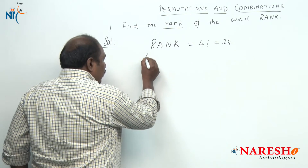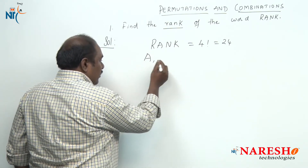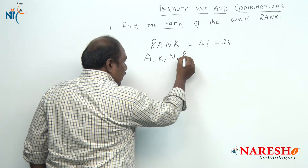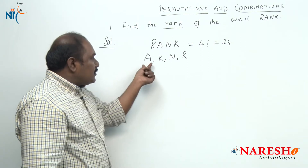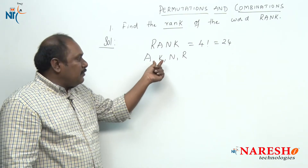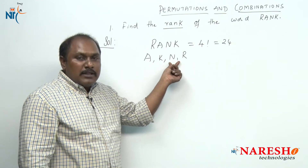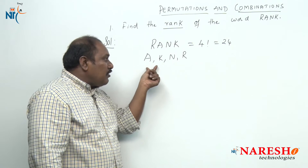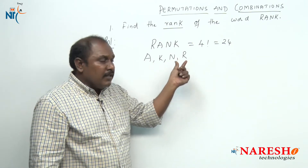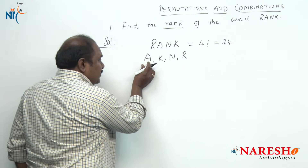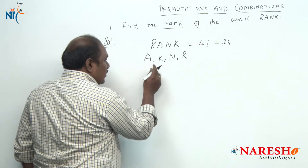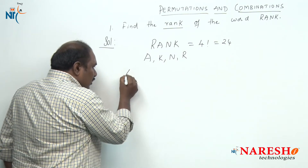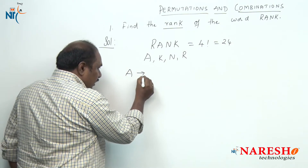If we write according to alphabetical order, the first letter should be A, next K, N, and R. So you have arrangements which start with A, arrangements which start with K, arrangements which start with N, and arrangements which start with R. Each of these should be equal. The arrangements which start with A are 6.